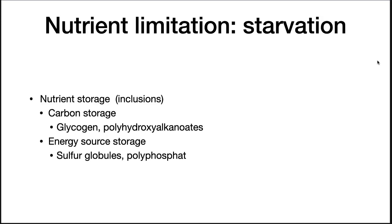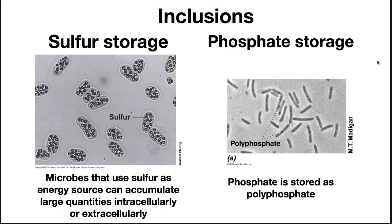So what happens to a microbe when it runs out of nutrients — i.e., nutrient starvation? Microbes must respond. One way to prevent starvation is to store things for later. Microorganisms have a number of ways of storing material that is in abundance. They can store carbon using polymers such as glycogen or polyhydroxyalkanoates. Energy sources can also be stored in granules, and some examples include sulfur globules and polyphosphate granules. Here are some examples of what I just talked about.